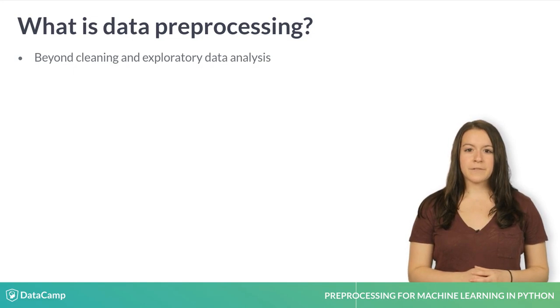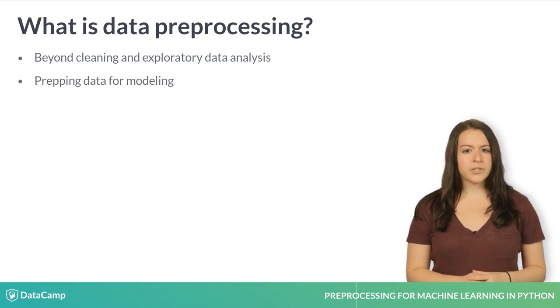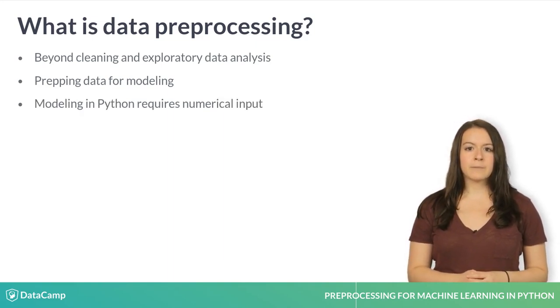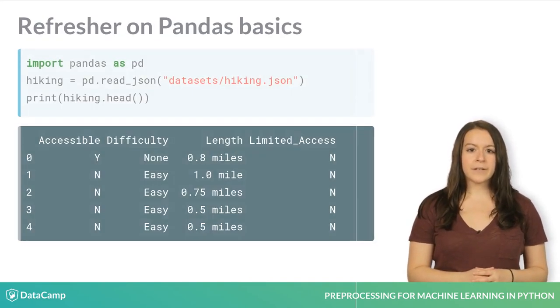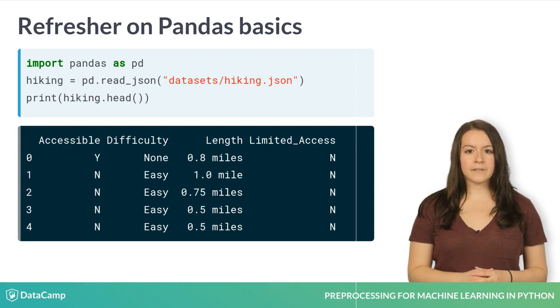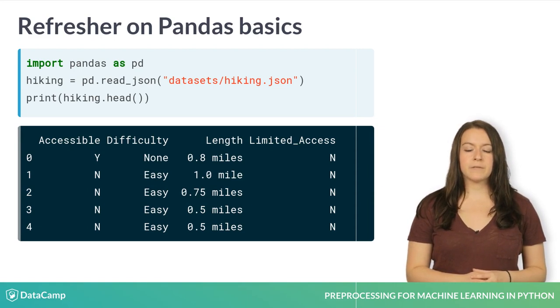Data preprocessing comes after you've cleaned up your data and after you've done some exploratory analysis to understand your dataset. Once you understand your dataset, you'll probably have some idea about how you want to model your data. Machine learning models in Python require numerical input, so if your dataset has categorical variables, you'll need to transform them. Think of data preprocessing as a prerequisite for modeling.